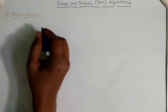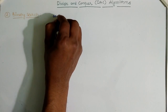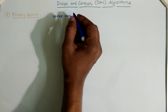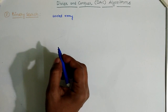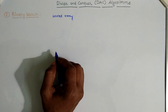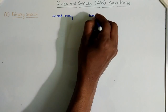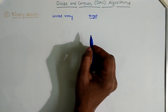Binary search is an approach which is applied on sorted array sequences, and it is used to search an element in the sorted array. The search procedure begins with the mid element, so we just divide the array into two parts based on the mid element. The selected or target value is compared with the mid element. If the mid element is equal to the target value, then the index of the mid element is returned.